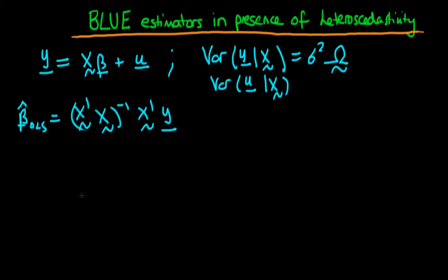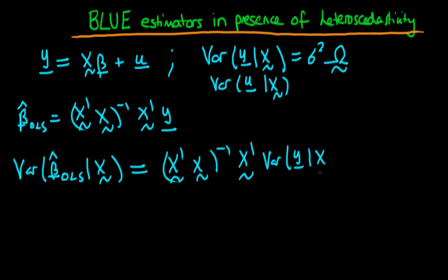And furthermore we can actually come up with an expression for the variance of beta hat OLS. So the variance of our OLS estimator beta hat OLS given x is just equal to x prime x to the power minus 1 times x prime times the variance of y given x times x times x prime x to the power minus 1.